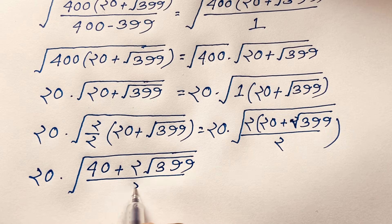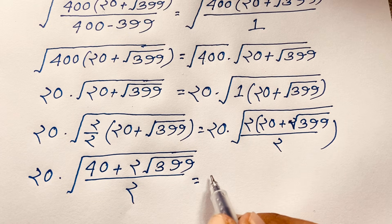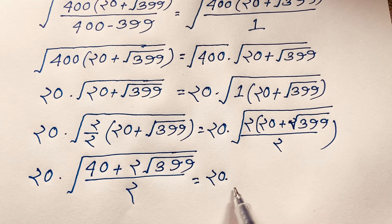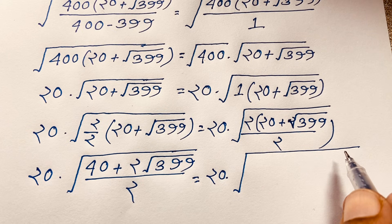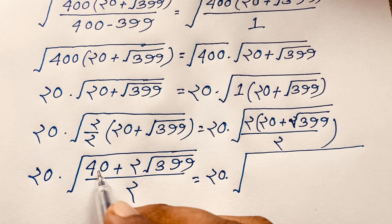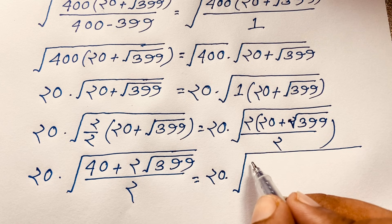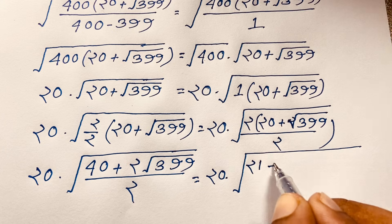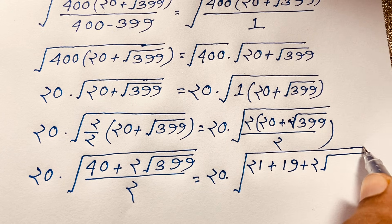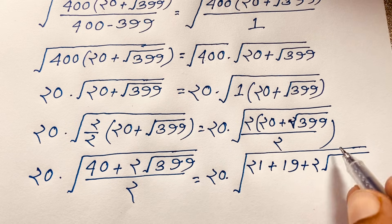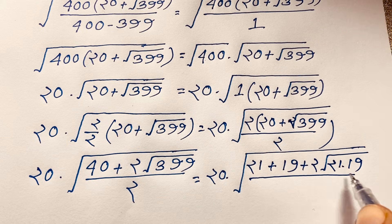Now applying a math formula: 40 can be written as 21 plus 19. So the expression inside becomes 21 plus 19 plus 2 times square root of (21 times 19), over 2. Note that 21 times 19 equals 399.